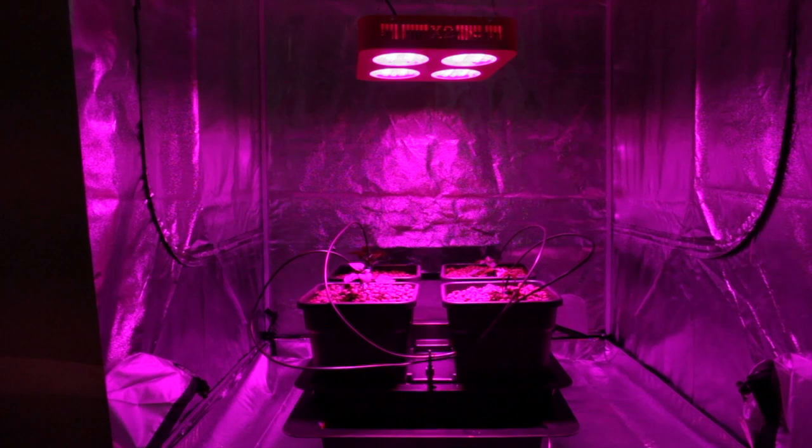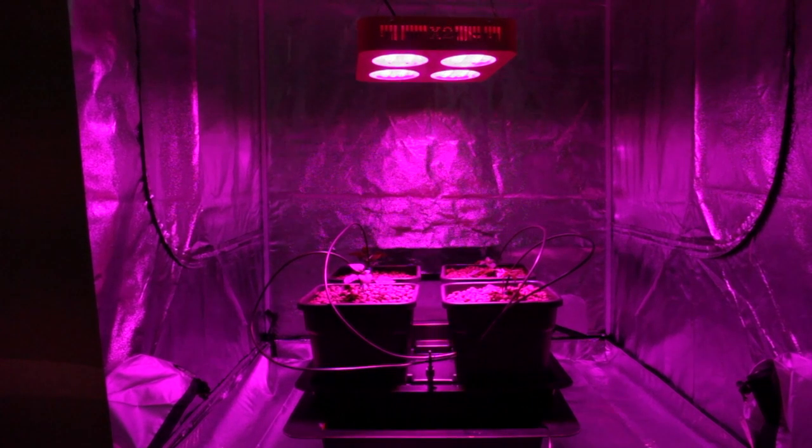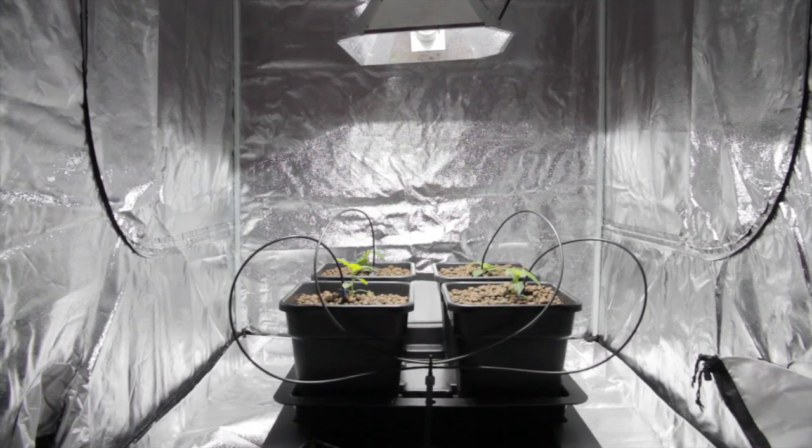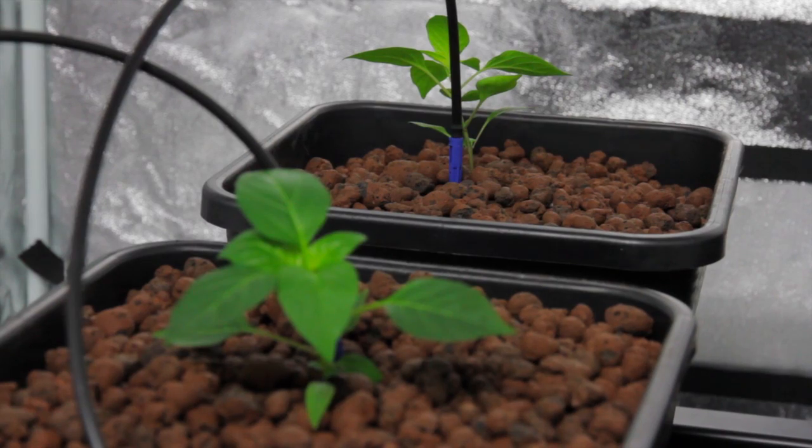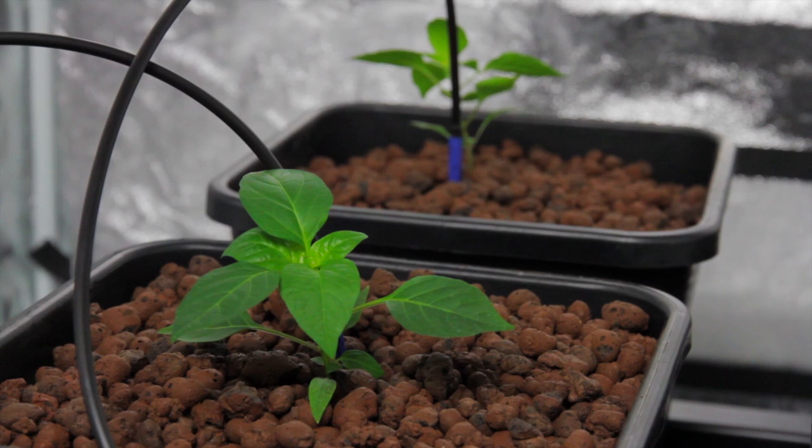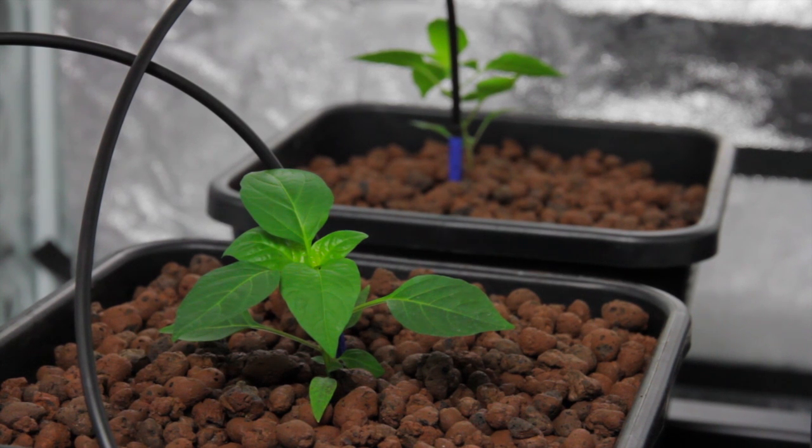Each combatant has its own grow tent to keep the lights separate. Each combatant is also 18 inches from the chilli plants. We've kept all these factors consistent. The difference is the lights.